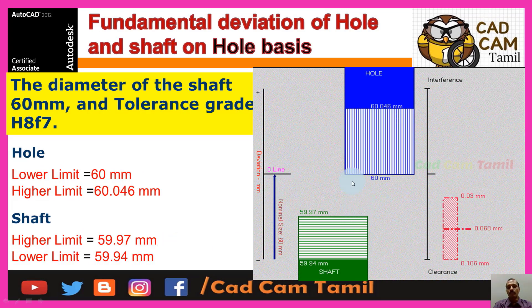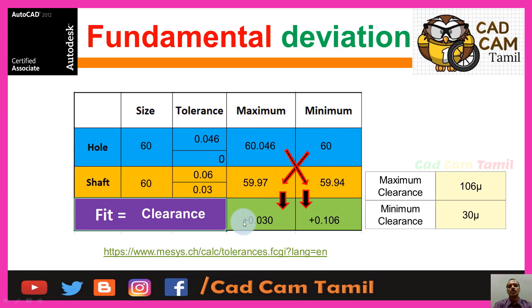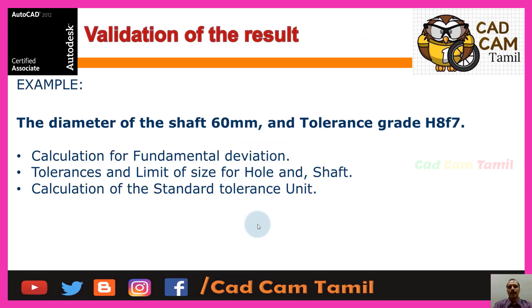Now, this is the fit. As usual, we have the hole basis system. Maximum clearance = maximum hole minus minimum shaft. Minimum clearance = minimum hole minus maximum shaft. The correct values are positive — it is a clearance fit. Very simple.